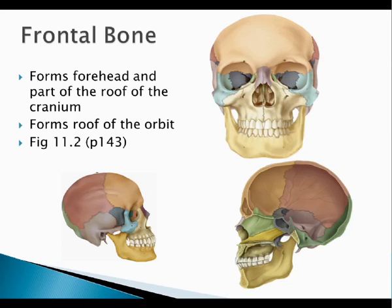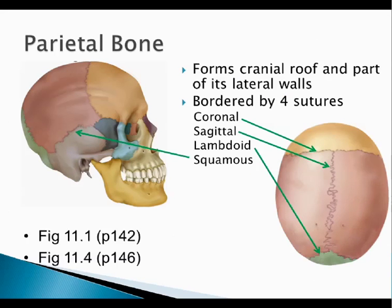The frontal bone makes up your forehead — that's really all you need to know. It's shown here in beige; it's the thick part of your noggin right up front. The parietal bones — 'parietal' means wall, and that's what it is. It's kind of the wall of your cranium. What's key to remember about the parietal bone are the four sutures that are associated with it.